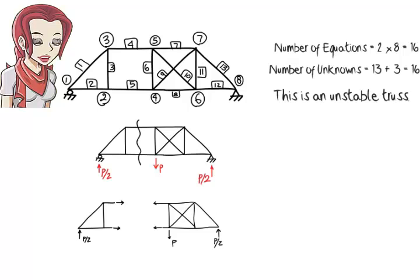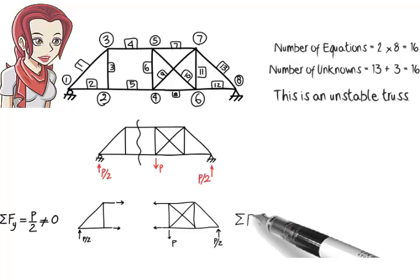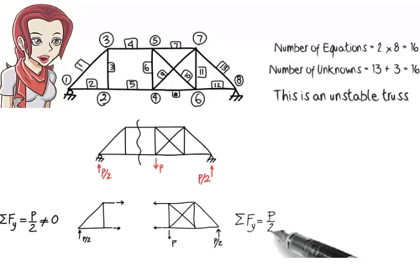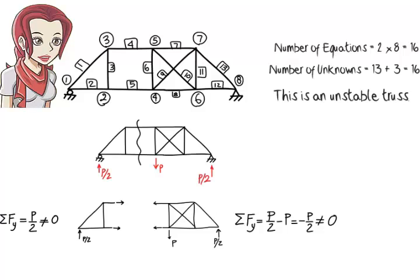One of the equations, however, cannot be satisfied for either segment. Sum of the forces in the y direction is not zero. For the left segment, we have sum of the forces in the y direction equals P over two. For the right segment, we have sum of the forces in the y direction equals P over two minus P or negative P over two. Since P is not zero, the segments are not in equilibrium. This means the structure is unstable.